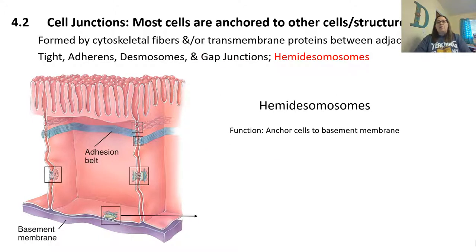Hemidesmosomes function in anchoring cells to the basement membrane. The basement membrane is really important for epithelial cells, so you're going to see hemidesmosomes in those types of tissues where the epithelial tissue is connected to the basement membrane.